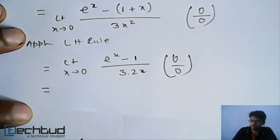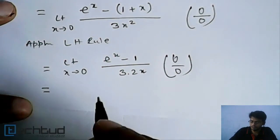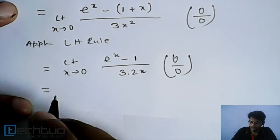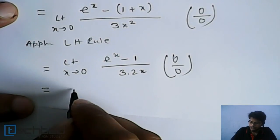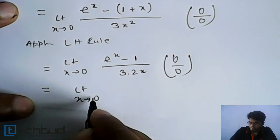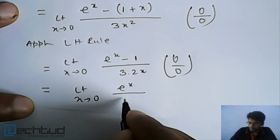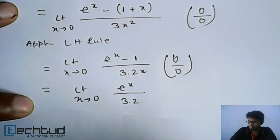So we will again differentiate it applying L'Hospital's rule. So it will be equal to limit x tends to 0, e to the power x upon 3 into 2.